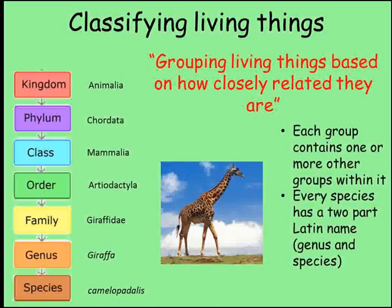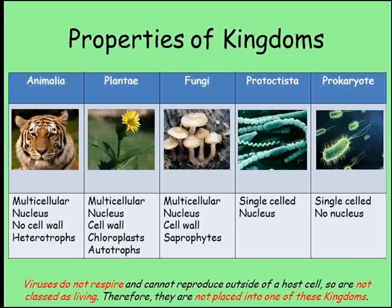Let's look a little more at what each of these kingdoms is like. Animals are multicellular, meaning they are made up of many different cells. These cells do not have cell walls or chloroplasts, but they do have a nucleus. Animals get their energy by feeding on other living things — we say that they feed heterotrophically. Plants are also multicellular, but their cells do have cell walls and chloroplasts containing chlorophyll, the pigment needed for photosynthesis, which is where they get their energy. We describe plants as feeding autotrophically, meaning they make their own sugar through photosynthesis.